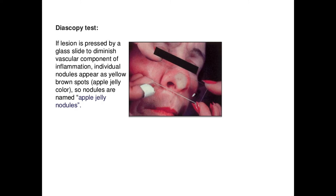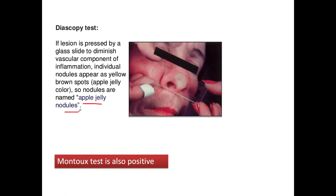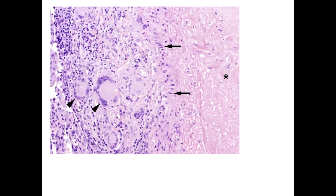On Diascopy, the individual nodules appear as yellow-brown spots, resembling the color of apple jelly — so these nodules are also known as apple jelly nodules. The Mantoux test is also positive in such patients.